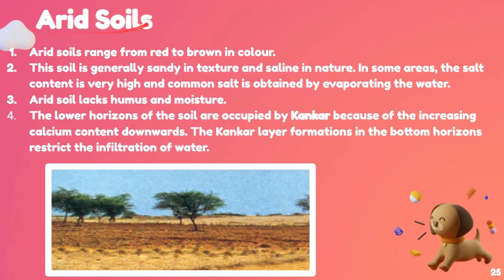Arid soil ranges from red to brown in color. Its texture is sandy and saline — the content of salt is much higher. Arid soil lacks humus and moisture, so it is not very fertile. The lower horizons of the soil are occupied by Kankar because of increasing calcium content downwards. The Kankar layer formations in the bottom horizons restrict the infiltration of water.